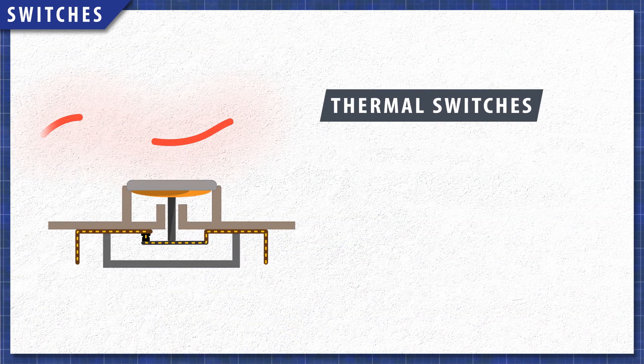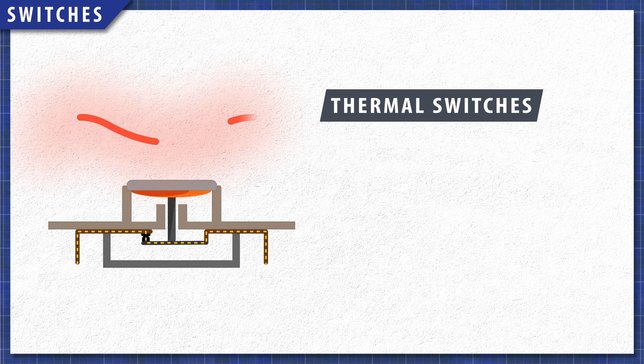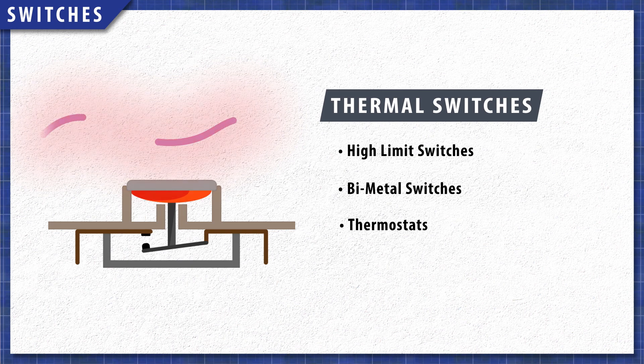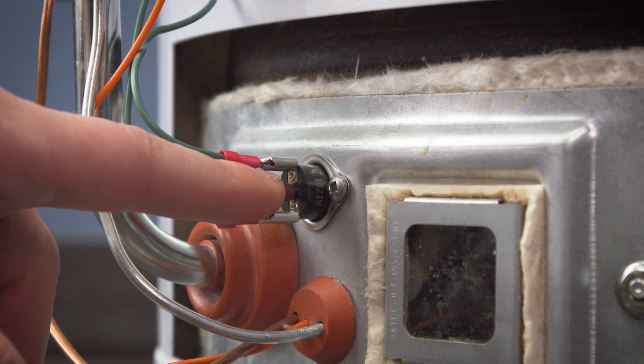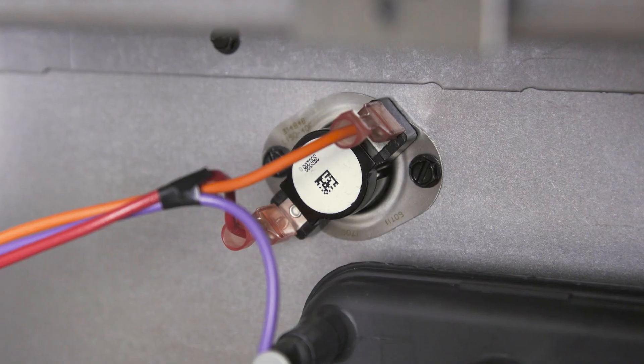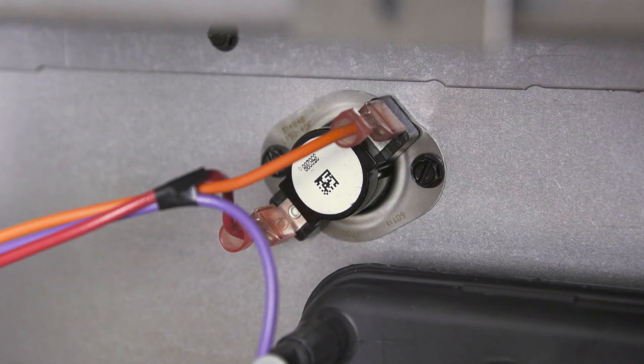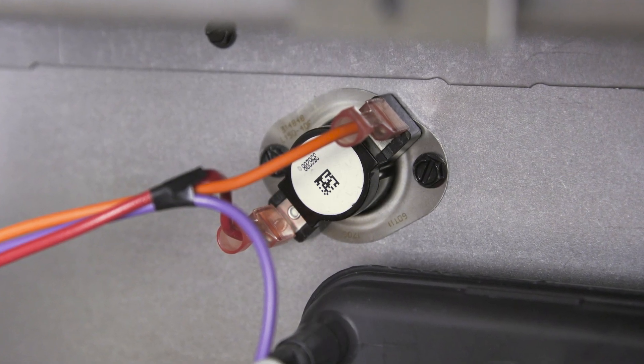Thermal switches respond to heat and will disconnect power at a set temperature. In some cases these are called high limit switches, bimetal switches, or thermostats. Some switches will reset automatically and others will use a reset button. These are commonly found in furnaces, dryers, and water heaters.